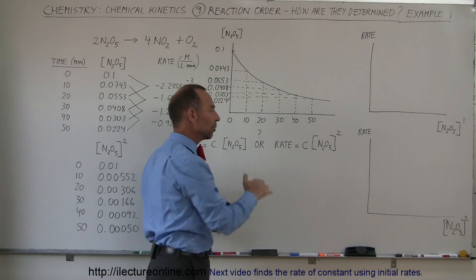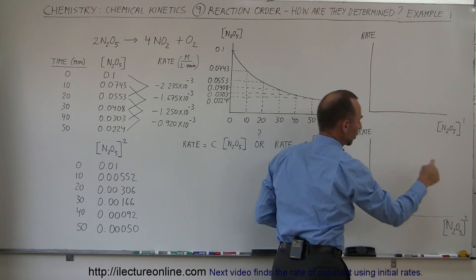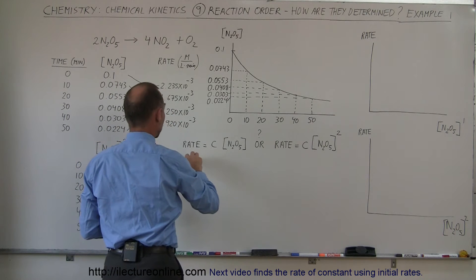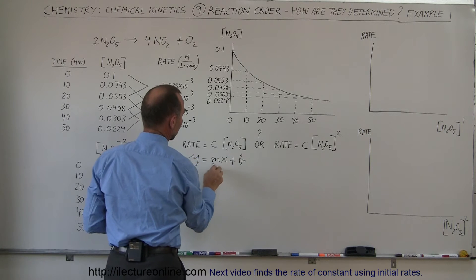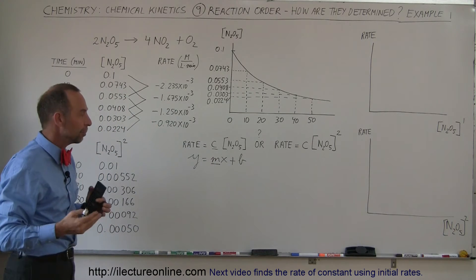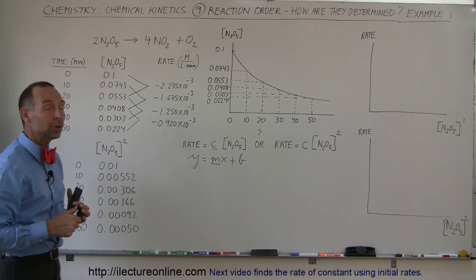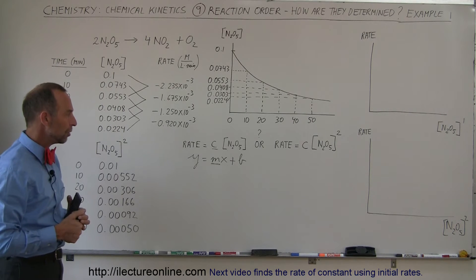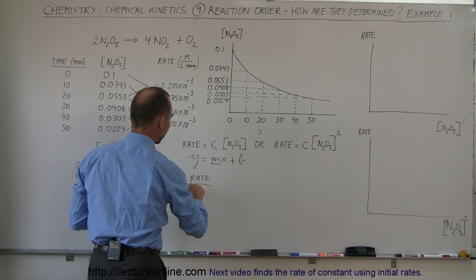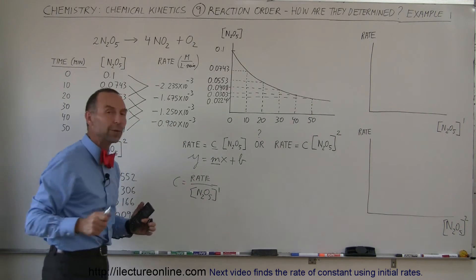We're going to graph rate versus concentration to the first power, and rate versus concentration to the second power. If we get a straight line — a y = mx + b relationship — we've found the correct order. We simply want to know if it's linear. To test first order, we find C equal to the rate divided by the concentration of dinitrogen pentoxide to the first power.